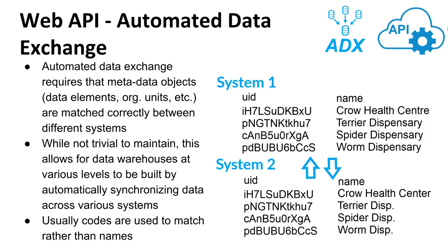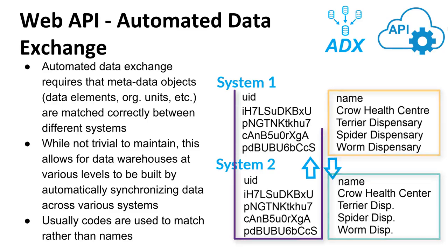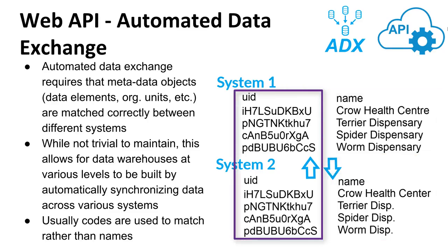In the example shown here, we are looking at organization units that exist within TrainingLand. In System 1, we see the names as they would appear. In System 2, the names are a bit different. We are therefore using a unique identifier — equivalent in System 1 and System 2 — to match these organization units. This allows the systems to recognize that these organization units represent the same thing, even if their names are not exactly the same.